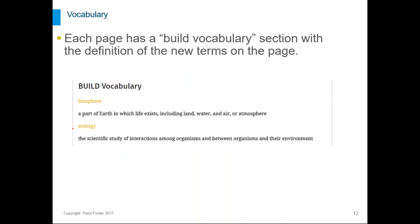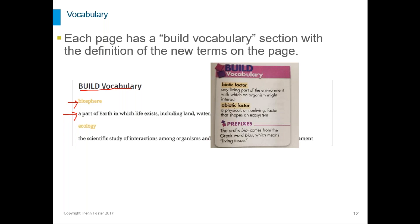There's also a lot of vocabulary in biology. In fact, each page of your textbook has a section with the definitions of all the new terms on the page. And it's marked build vocabulary. So if you have the ebook version, it's this, build vocabulary. And these kind of pale yellow words are the words that you need to know. And then here's the definitions. If you have the textbook version, it looks more like this. It's a box on the side of the page with a purple heading that says build vocabulary.